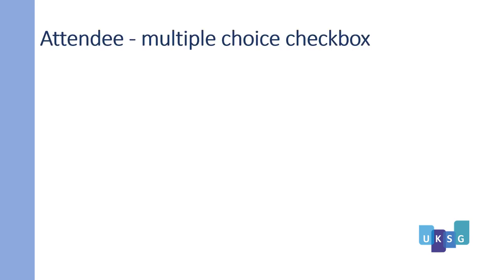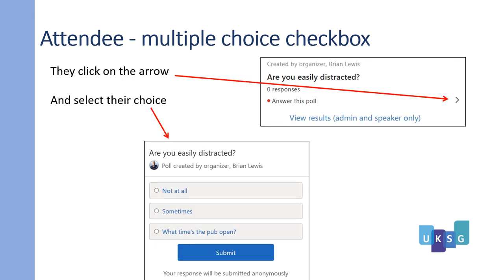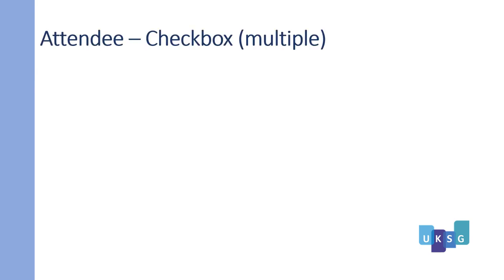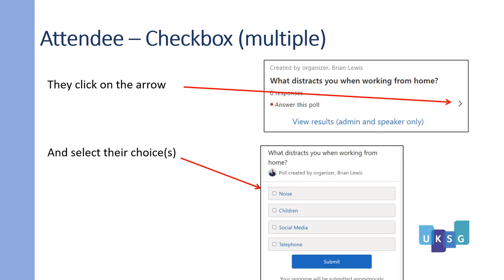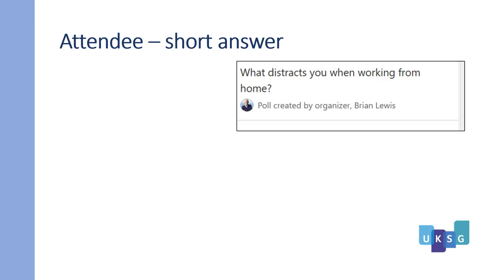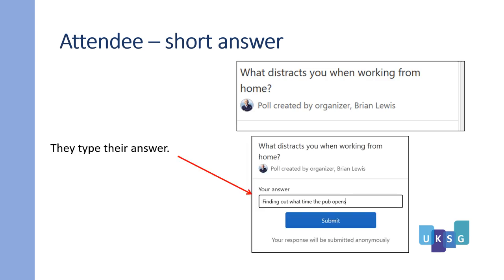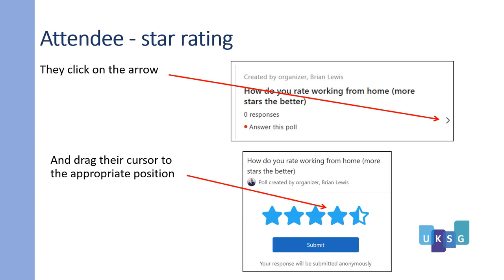For the attendee multiple choice and checkbox options: when they get the screen up, they click on the arrow and select their choice. With the multiple choice checkbox, the attendee will click on the arrow and select their choice or choices. When you have set up a poll requiring a short answer, the question comes up and they type in their answer. With the star rating option, they click on the arrow and drag the cursor to the appropriate position.